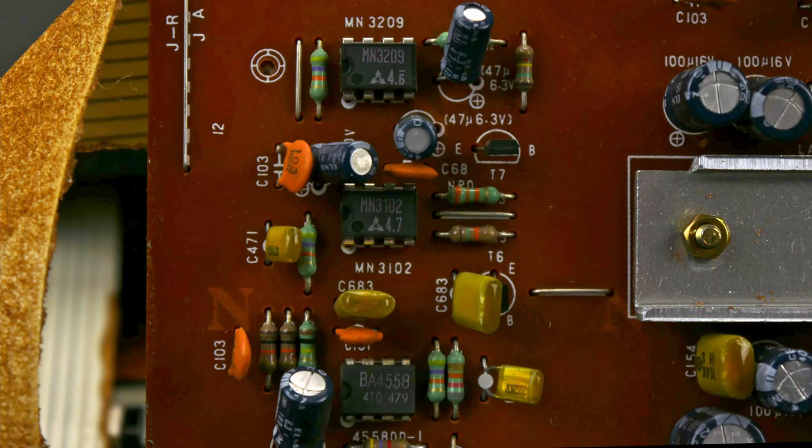This is a stereo chorus with only one delay line. A mix of effect and dry signal is sent to both outputs, but one effect signal is phase inverted. This means the effect signal is gone if you convert the stereo signal to mono. If you want to know a bit more about how a chorus works, I recommend to check out my Juno 60 review.